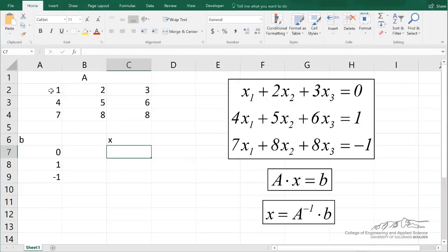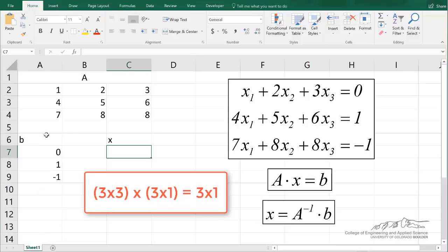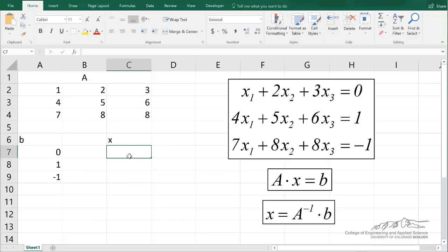A inverse. So the inverse of a square matrix is always a square matrix of the same size. b is a 3 by 1. So when we take a 3 by 3 times a 3 by 1, what we end up with is a 3 by 1. So I'm going to go ahead and highlight a 3 by 1 region.